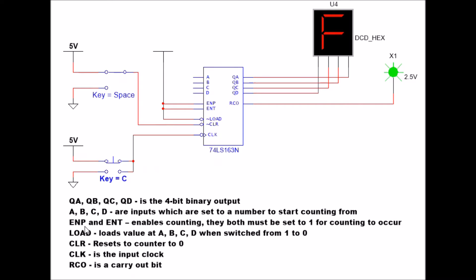The next two buttons, ENP and ENT, you have to tie those to power in order for the thing to count. It enables counting. I have no idea why these pins are even here. But these two pins, you basically have to power to five volts or the thing won't count at all.